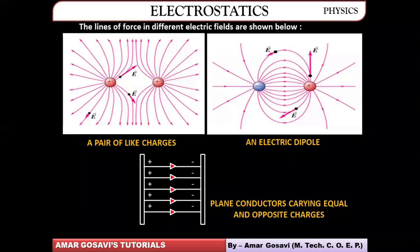In any electric field diagram, wherever the lines of forces are close to each other, the electric field strength is high. Wherever they are apart from each other, the electric field strength is low.